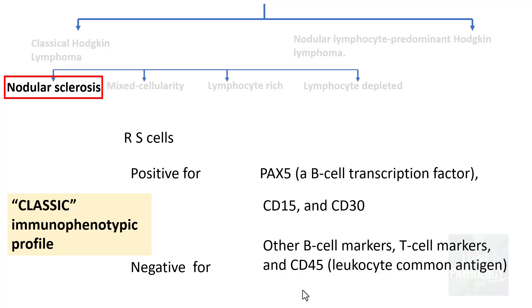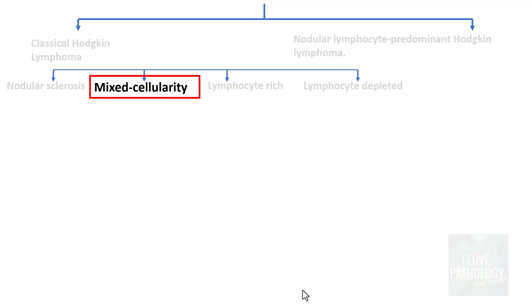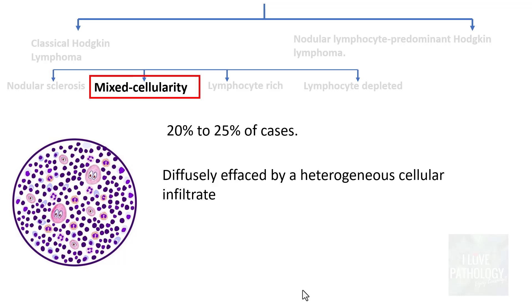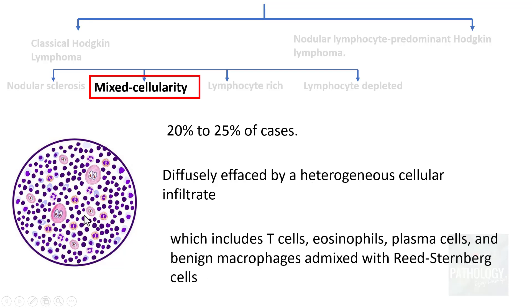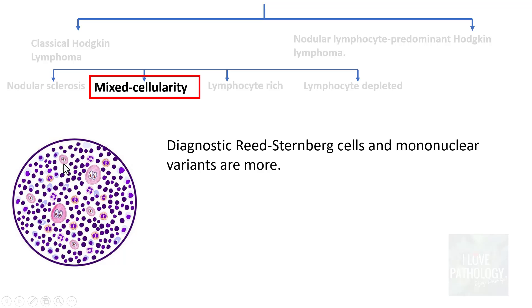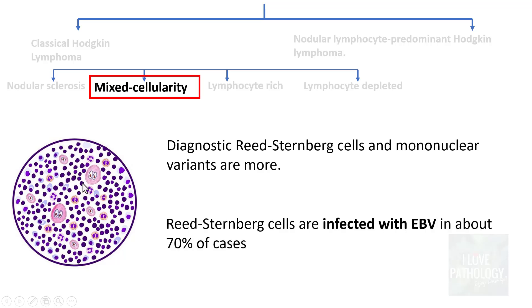The second classical Hodgkin lymphoma subtype is mixed cellularity, accounting for around 20 to 25% of cases. Histologically, the lymph node is diffusely effaced by a heterogeneous cellular infiltrate including T-cells, eosinophils, plasma cells, and macrophages, mixed with classical Reed-Sternberg cells and mononuclear variants. The mononuclear variant is also referred to as the Hodgkin cell. The Reed-Sternberg cells are infected with Epstein-Barr virus in around 70% of cases.